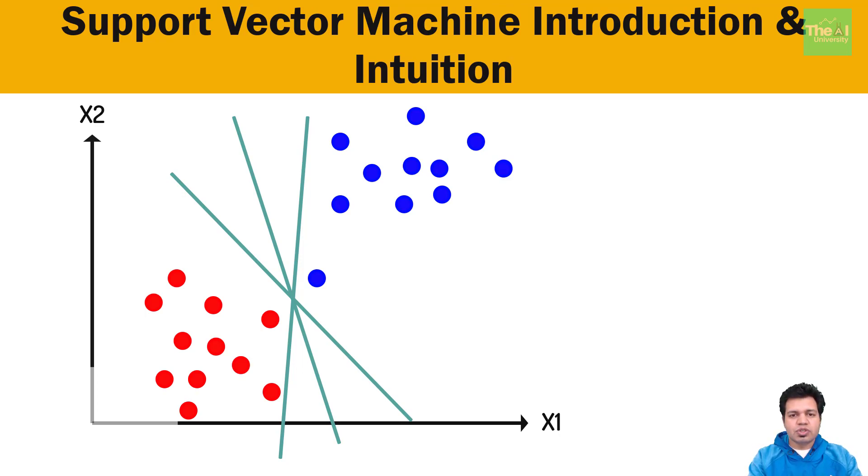So in support vector machine, we try to find out the best optimal line or decision boundary which can help separating out two dimensional space into classes. The way SVM or support vector machine searches for this line is by making use of maximum margin.